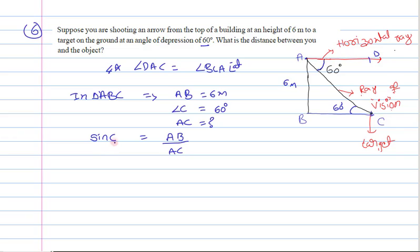We know sine C. The C value is 60 degrees. That means sine 60 degrees equals 6 meters divided by AC.